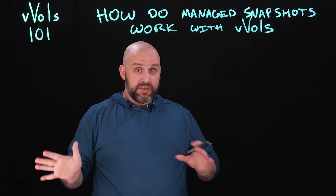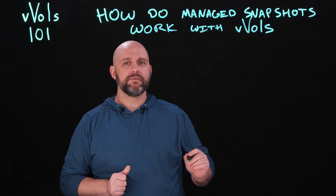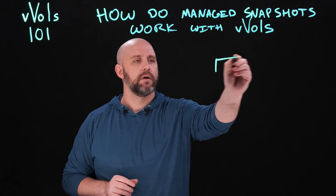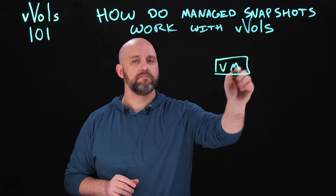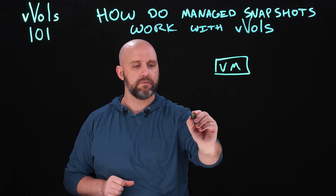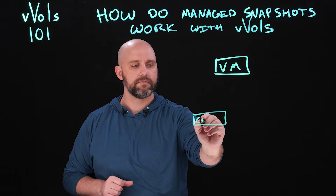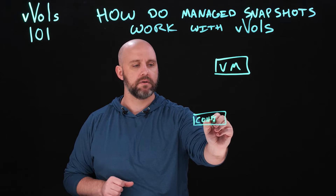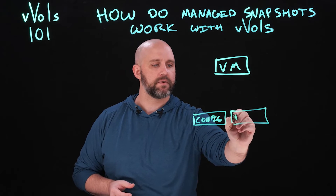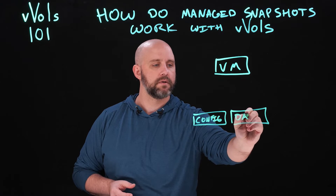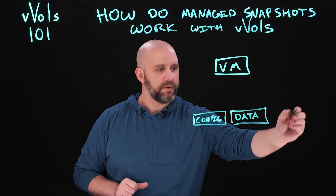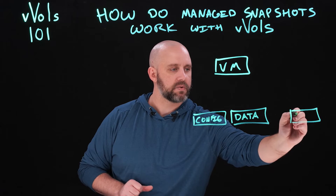Those are things you don't actually need to worry about in the vVols workflow with how managed snapshots work. When we have a VM that's utilizing vVols, remember that it has its own volumes on the array itself — there's that config vVol, and depending on how many virtual disks, a data vVol for each virtual disk. In our example, we'll just have one virtual disk to keep it simple. And when the VM is powered on, there is that swap.